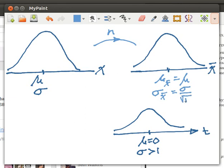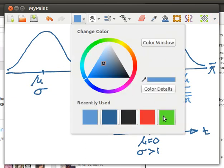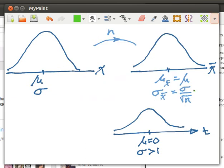Now here's an important fact. We seldom know what the population standard deviation is. So what we do is, we'll approximate this with the standard deviation divided by the square root of n. So that's how we get around that particular problem.